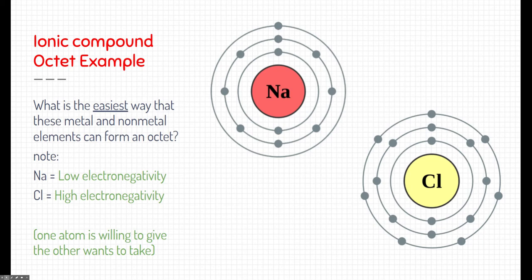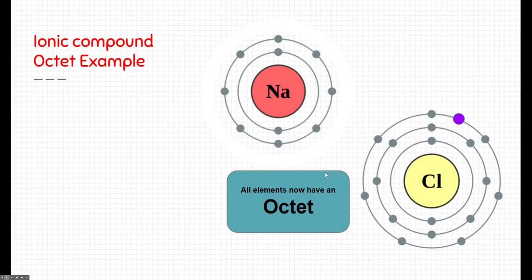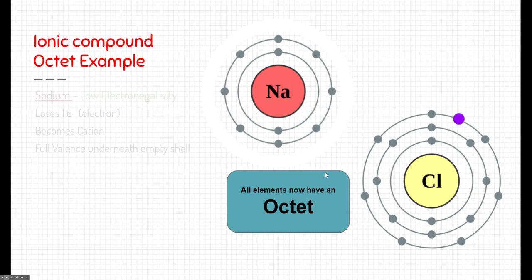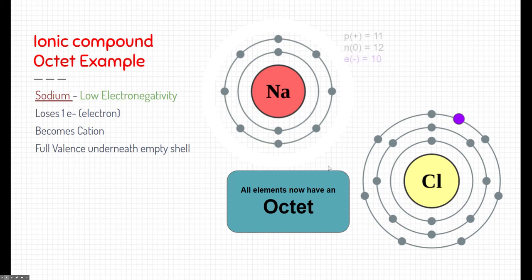We have our metal giving an element, or giving an electron to our non-metal. So these elements now both have an octet. See, chlorine took that electron from sodium. Now, sodium, because of its low electronegativity, loses that negative electron, which means that sodium has one less electron than normal.